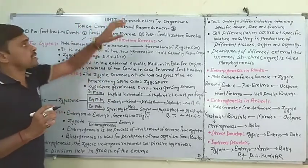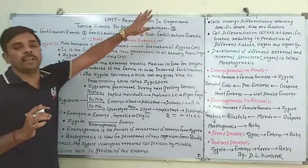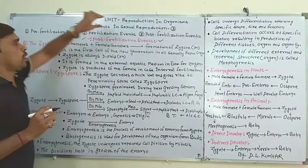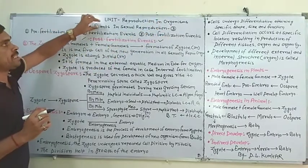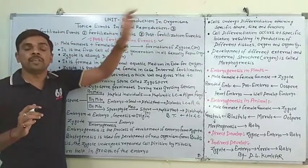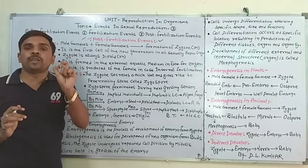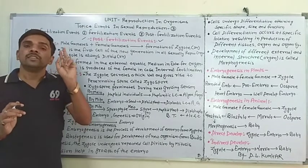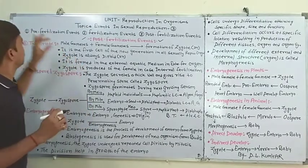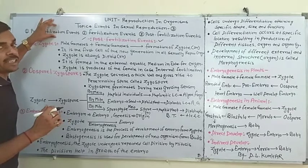I am discussing Unit 1: Reproduction in Organisms, and the topic is Events in Sexual Reproduction. There are three types: pre-fertilization events, fertilization events, and post-fertilization events. Pre-fertilization and fertilization events were discussed in previous videos.